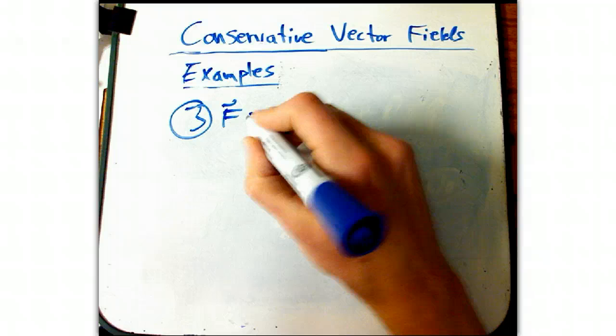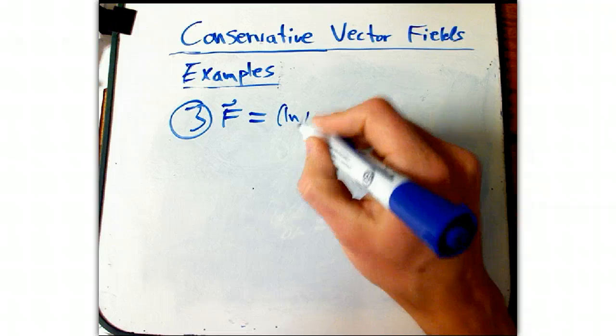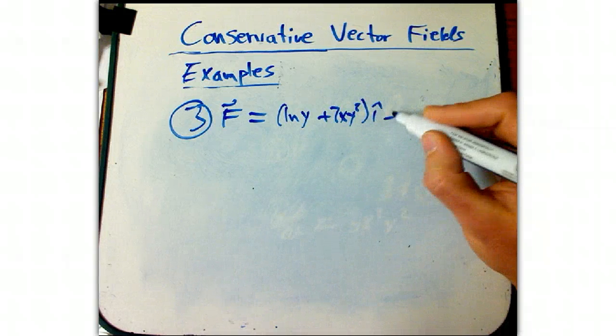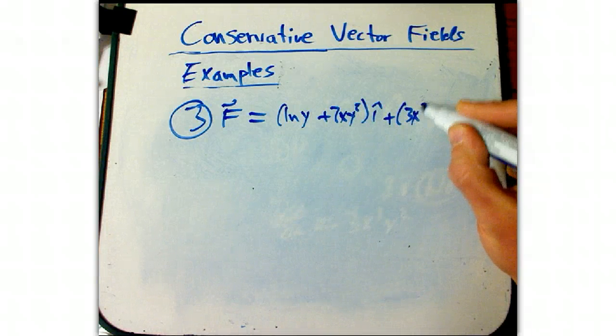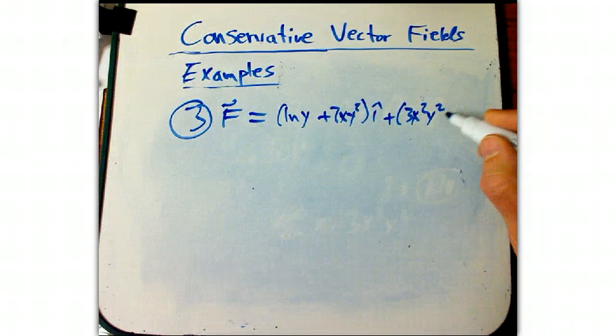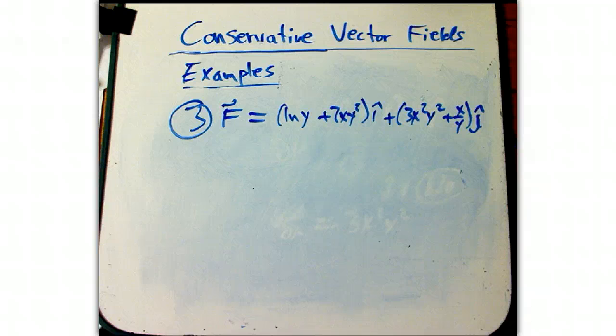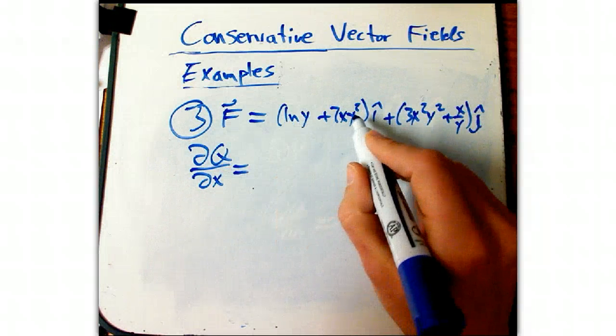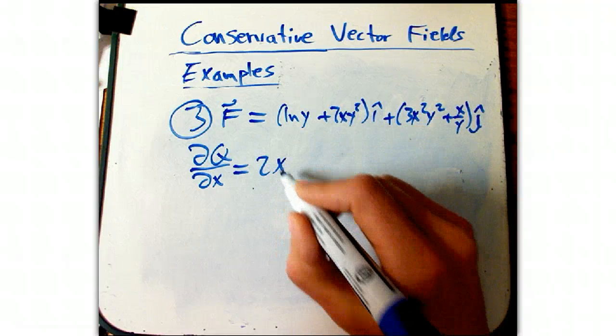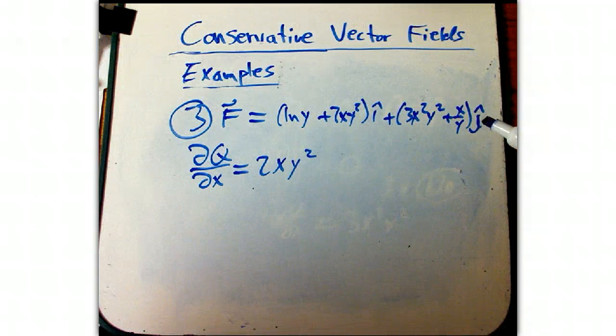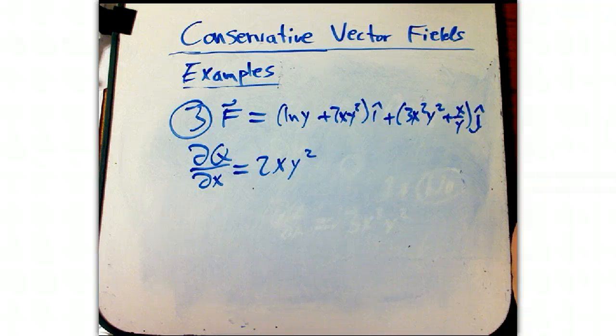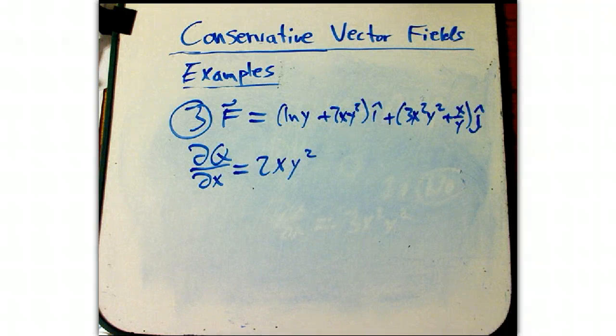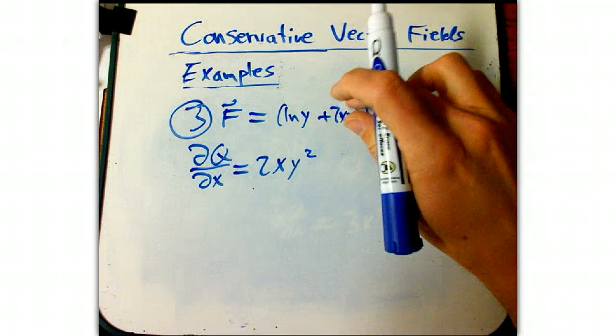I think that was supposed to be example two. What about another example in the plane? Again, let's say F equals the quantity ln y plus 2xy squared i, plus 3x squared y squared plus x over y, j. Let's test it. It's 2xy cubed.